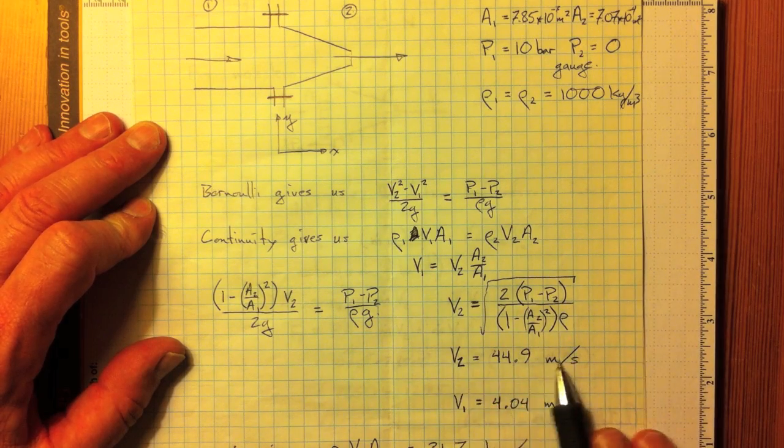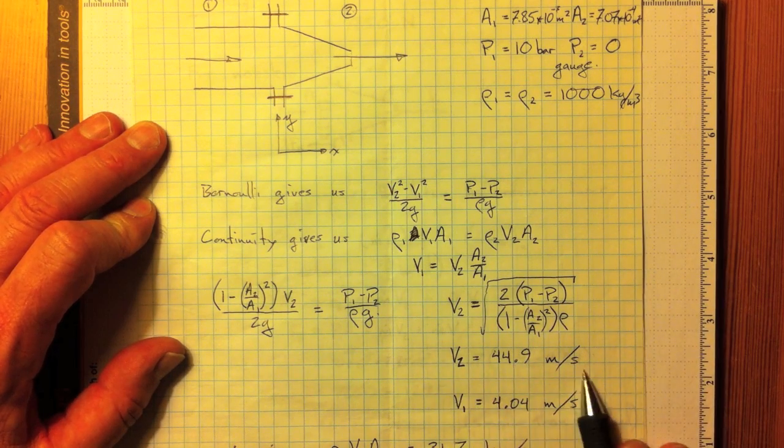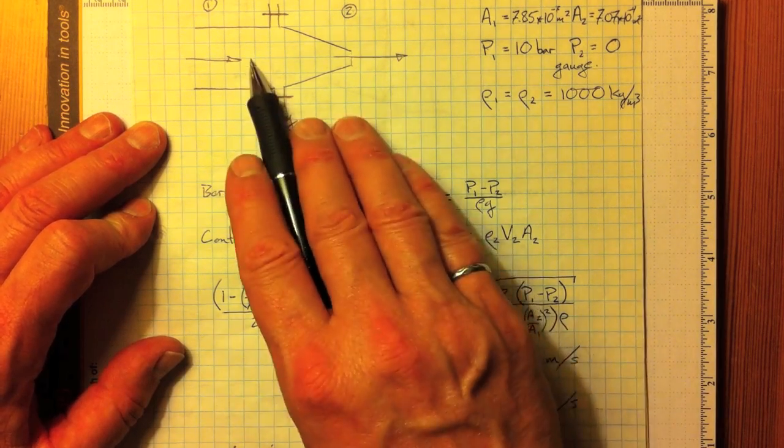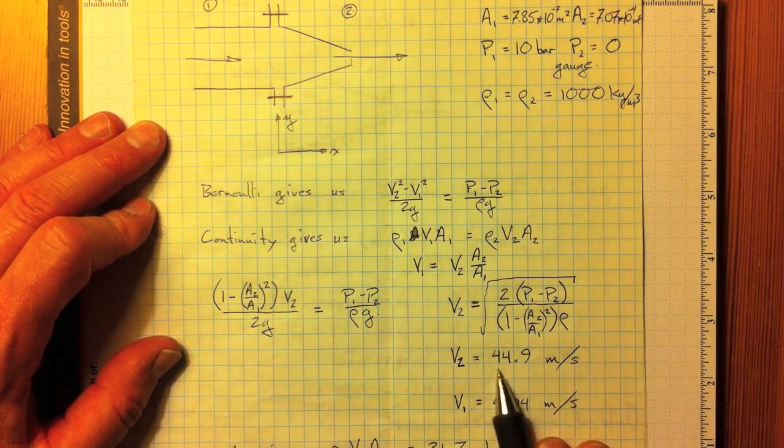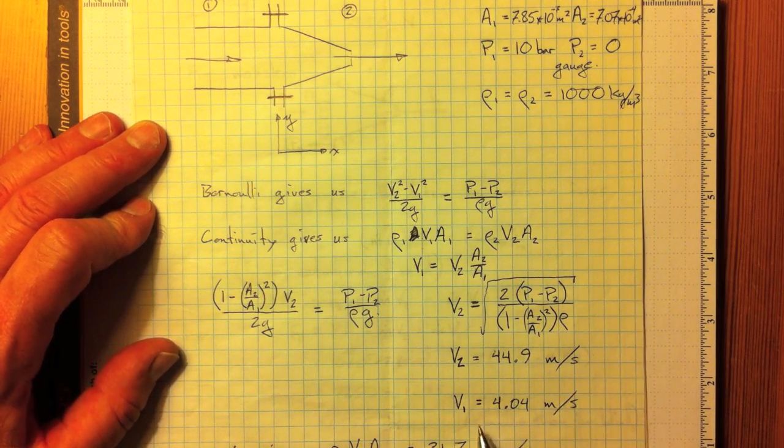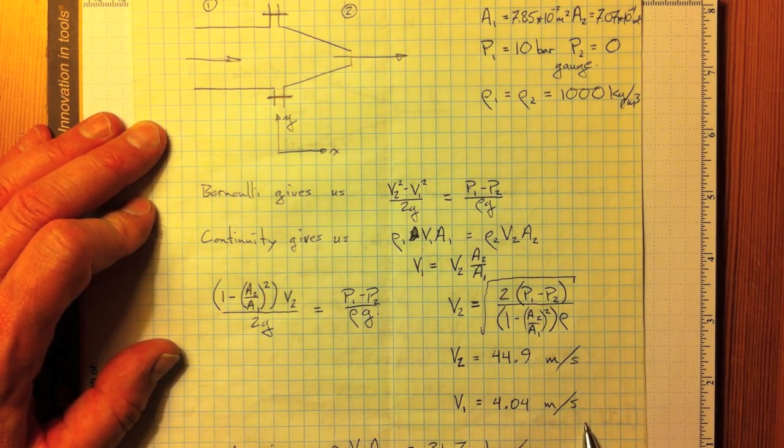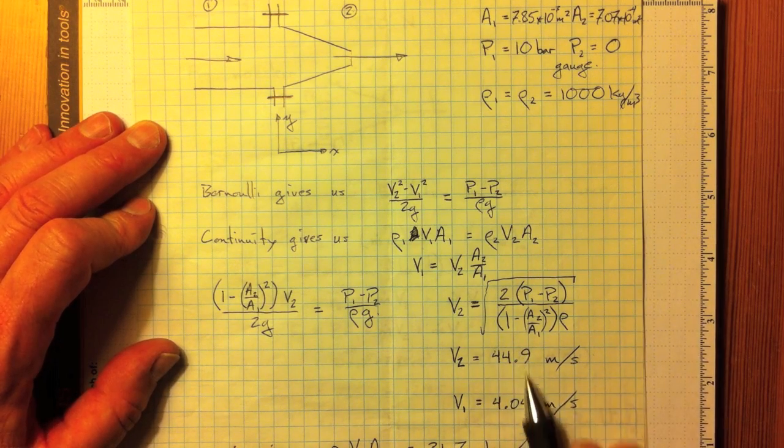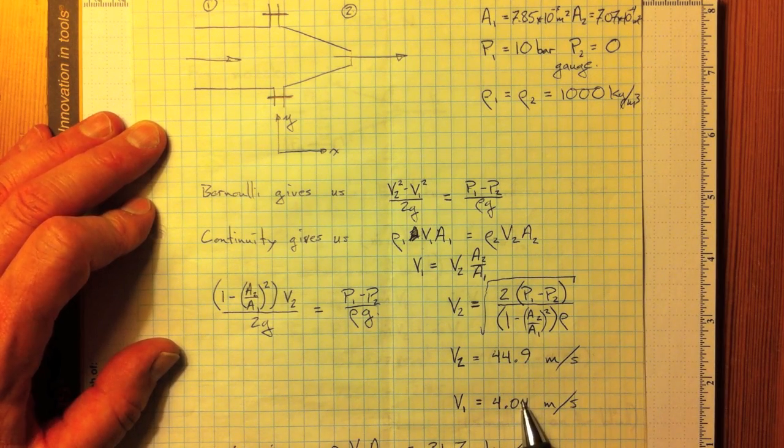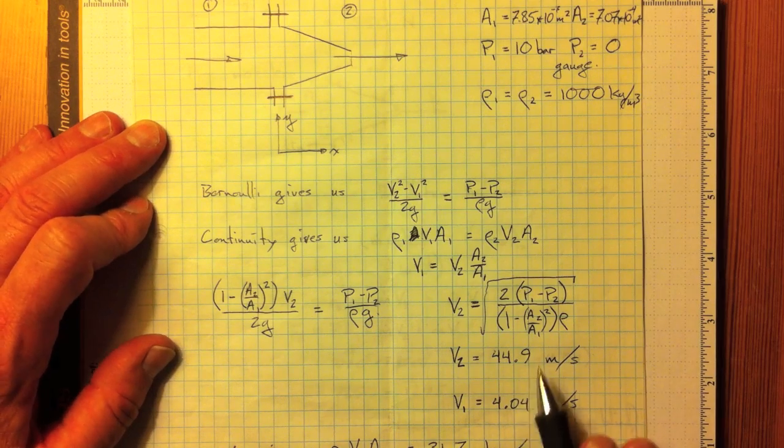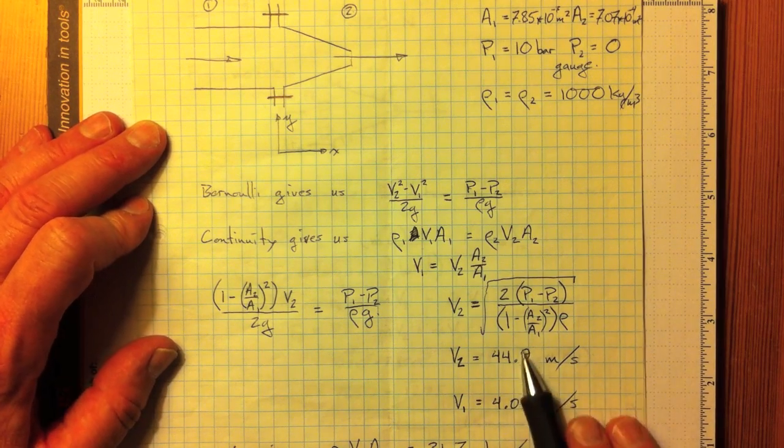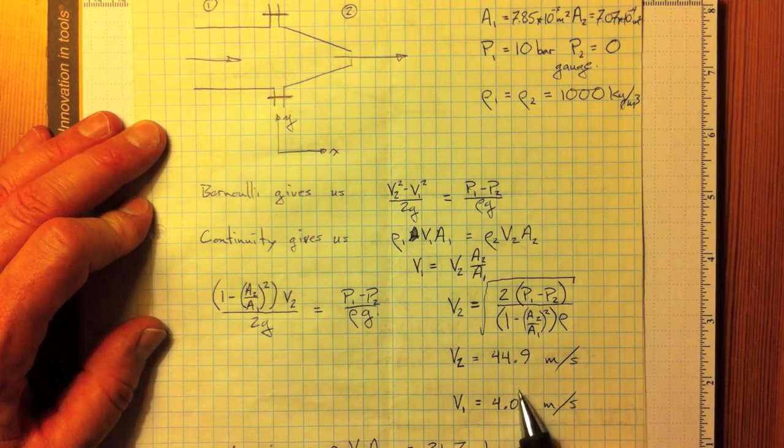Simplifying that we get V2, and in this case for 10 bar there, V2 is about 45 meters per second, and V1 is about 4 meters per second. So, different by a factor of about 10, and as a result, they're going to have effects on Bernoulli's equation different by a factor of about 100.